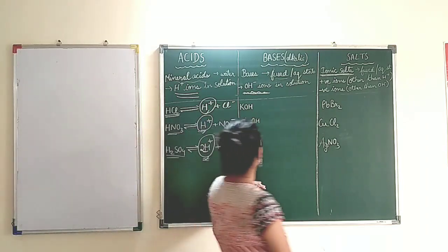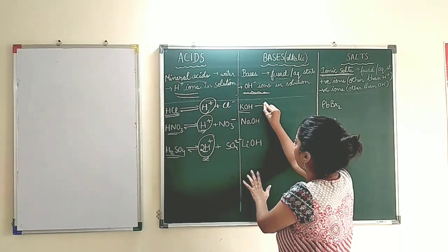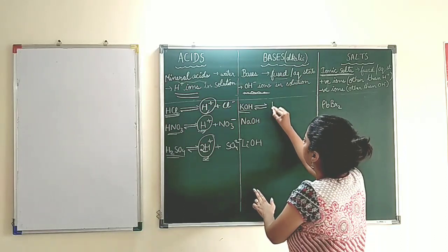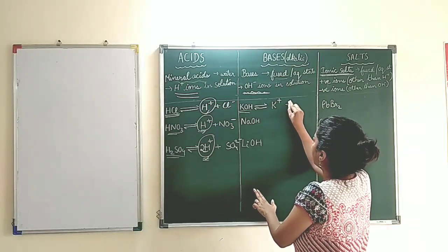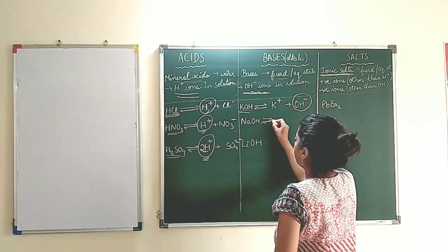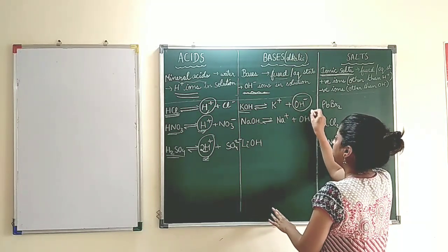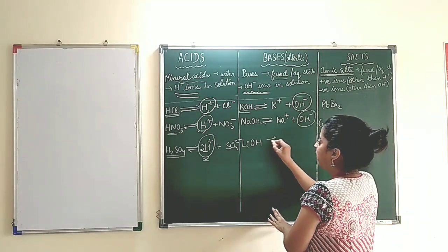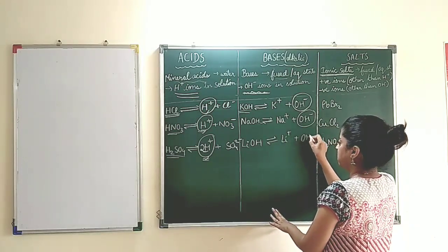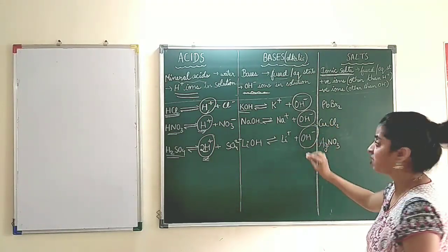Now coming to bases, I have taken three examples. Potassium hydroxide when dissolved in water or in fused state gives out K+ and OH- ions. Sodium hydroxide gives Na+ and OH- ions. Lithium hydroxide gives Li+ and OH- ions. So here they are furnishing OH- ions in the solution state.